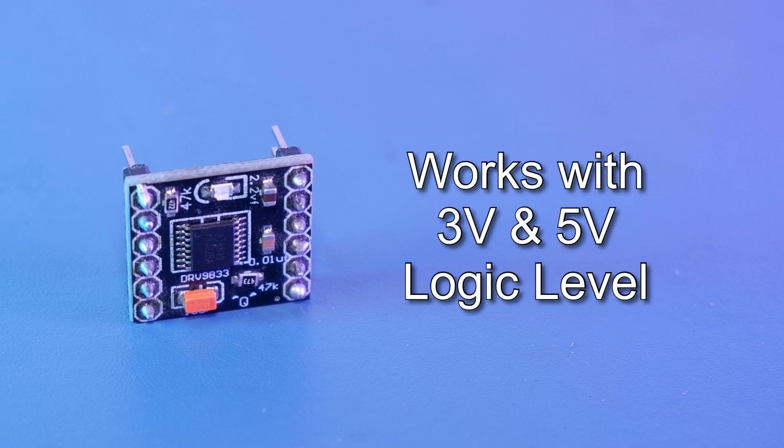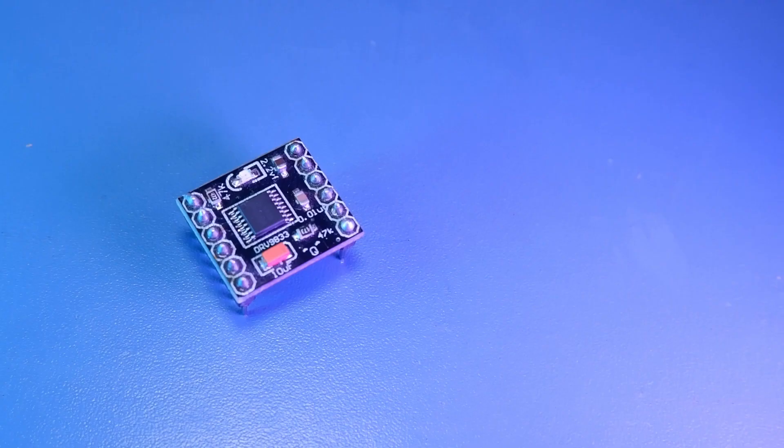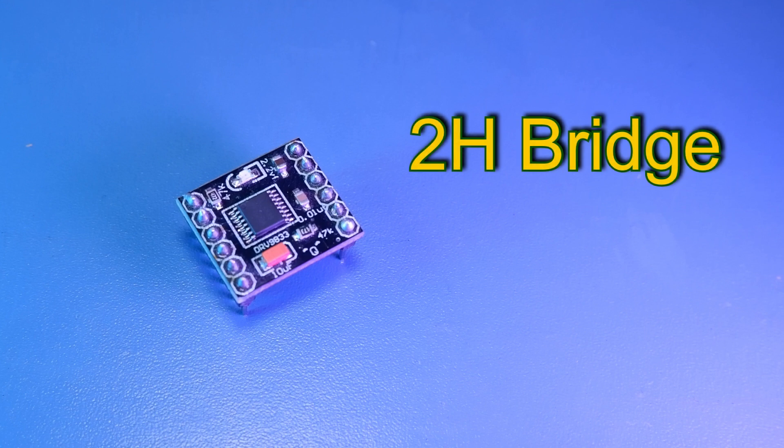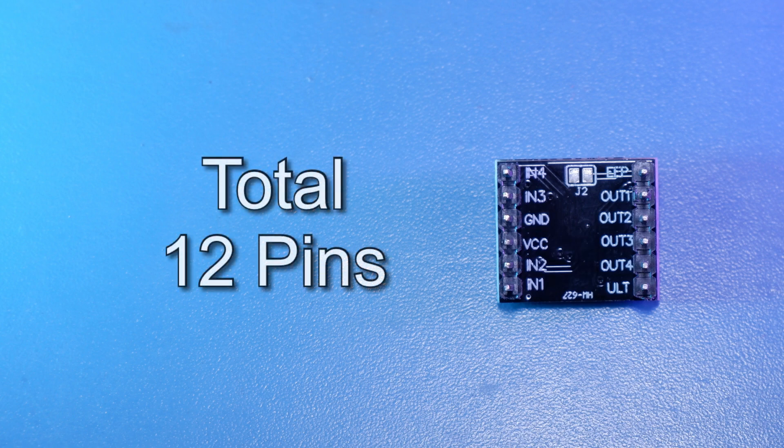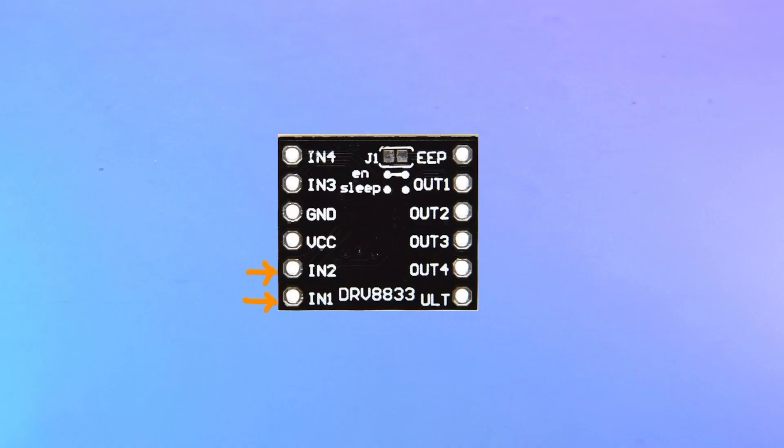And 2 ampere peak current. And it is compatible with 3 volt and 5 volt logic level. And like all motor drivers out there, it's got 2 H-bridges to run two motors separately. Now about the pins on this motor driver, we have total 12 pins. 4 of them are used for input and 4 of them are used for output for 2 DC motors. And we have 2 pins for VCC and ground for power.